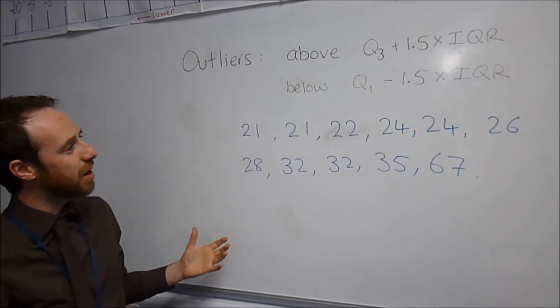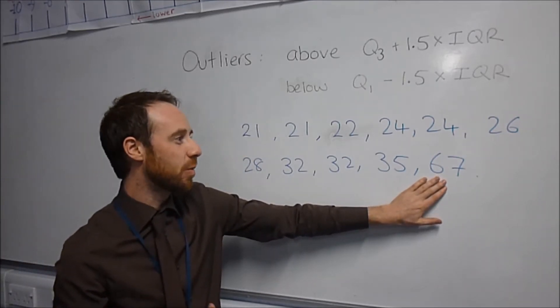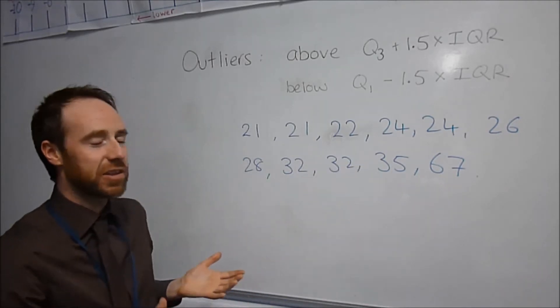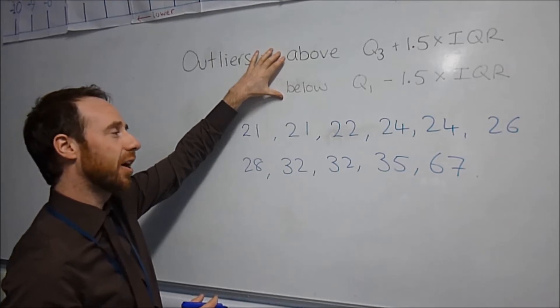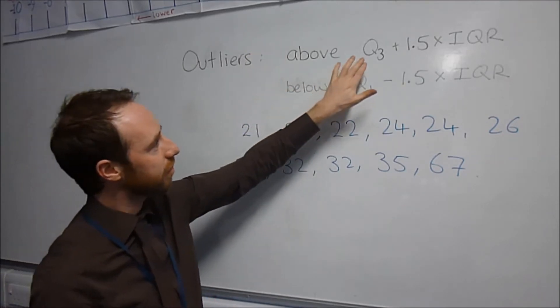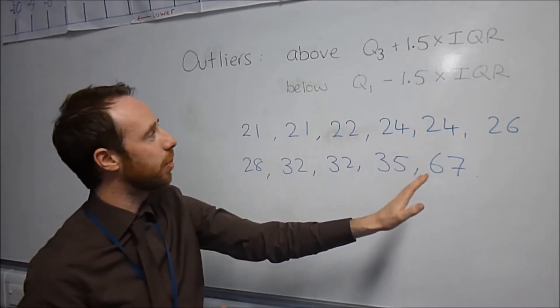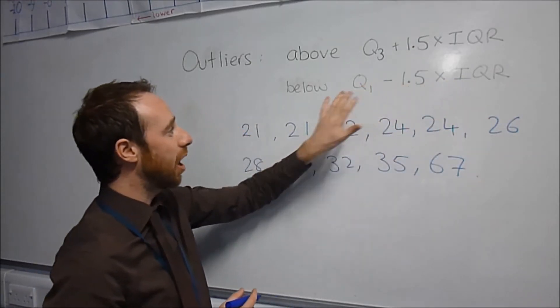So we're going to look at the idea of outliers. It makes sense that an outlier is a piece of data that is a long way from the rest of them. So if we look at this example, we might consider 67 to be an outlier. If we suspect this of being an outlier, we need some measure of deciding if it is or isn't — and this is where we use these rules. Something is an outlier if it is 1.5 times the interquartile range above Q3, or 1.5 times the interquartile range below Q1.